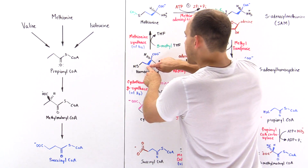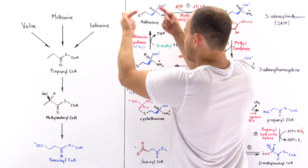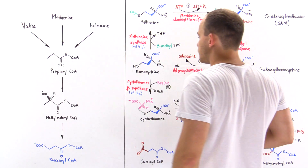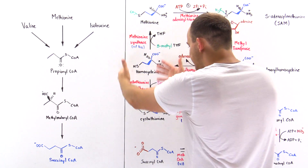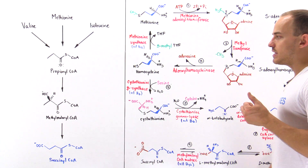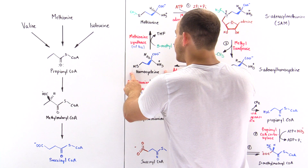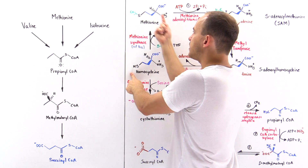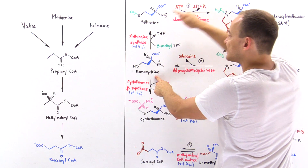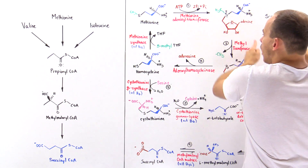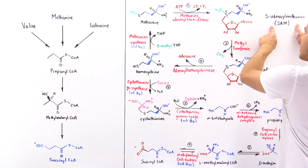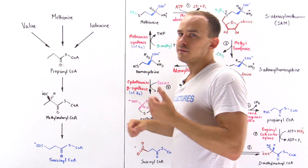Before we take homocysteine and continue on the pathway to generate succinyl coenzyme A, we should note that homocysteine can also be used to regenerate methionine. This is what we call a cycle — we begin with methionine, move along, and generate that methionine back. In the process, we also generate the SAM molecule that can be used to methylate a particular target molecule.